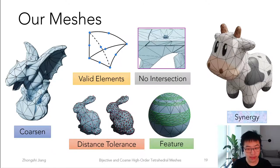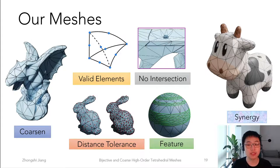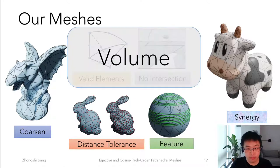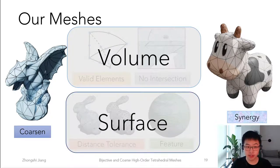Our method provides a solution to the problems we just mentioned. Our method strives to generate a coarse mesh while satisfying the validity constraints with users' requirements. The requirements can be categorized into those related to the volume and those happening around the surface. Therefore, I will first explain what happens around the surface, then integrate this into a volumetric pipeline.